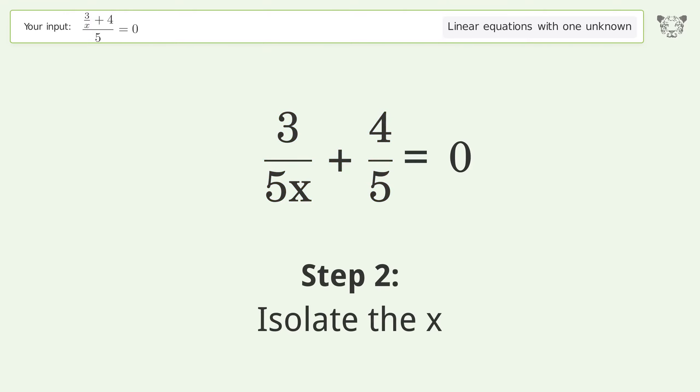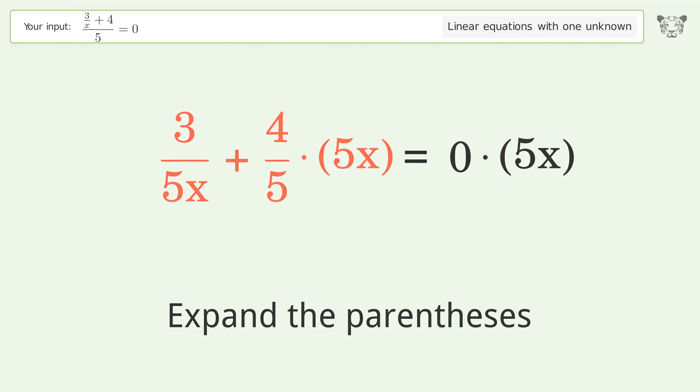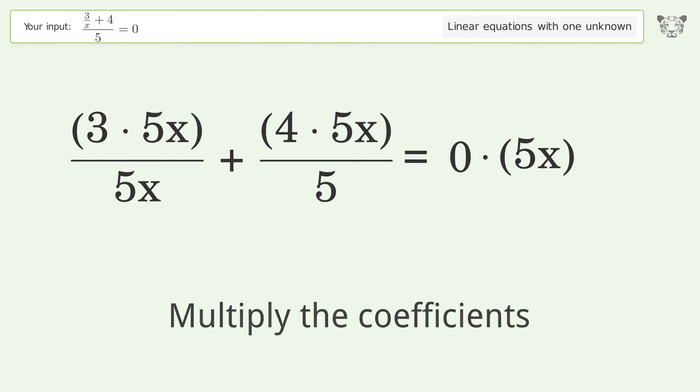Isolate the x. Multiply both sides by 5x. Expand the parentheses. Multiply the coefficients.